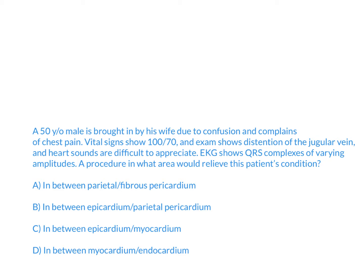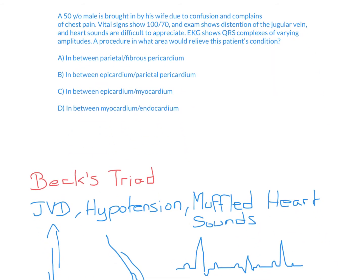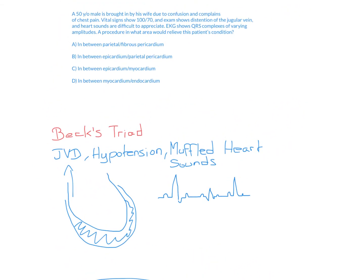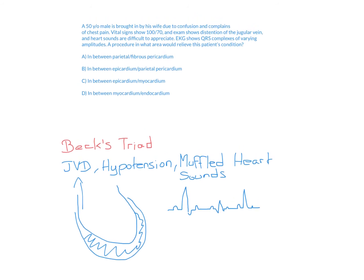The answer is going to be B — in between the epicardium and the parietal pericardium. This is called cardiac tamponade. Cardiac tamponade is when you have fluid in between the epicardium and the parietal pericardium.